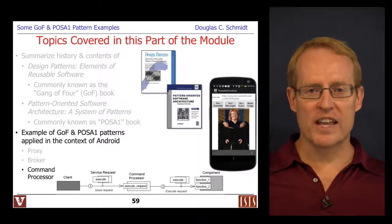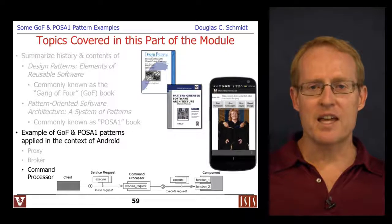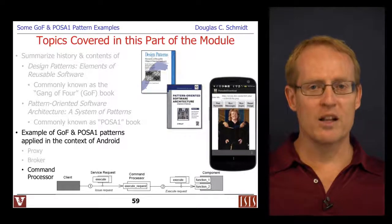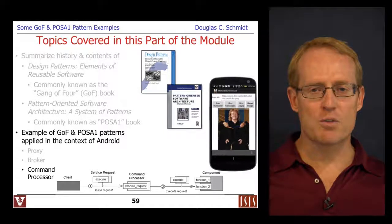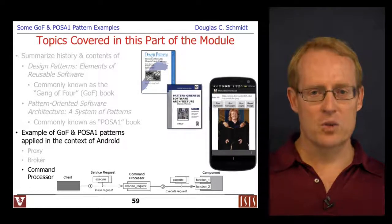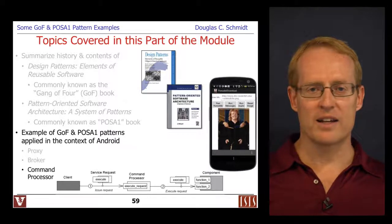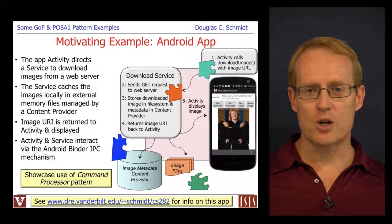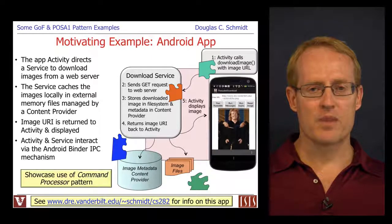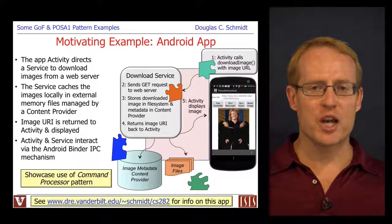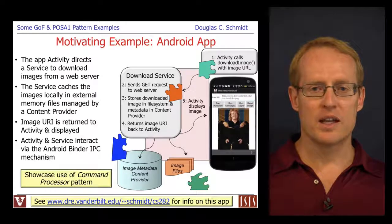As before, we keep our motivating example the same. We have an activity that responds to a button click in an Android user interface to pass a URL to a download service process. That download service contacts a web server, downloads image content, stores it in the file system, stores metadata in a content provider tracking download time and size, and then passes the URI back to the activity, which displays the image on the Android device. We'll show how command processor solves design challenges in this Android context.